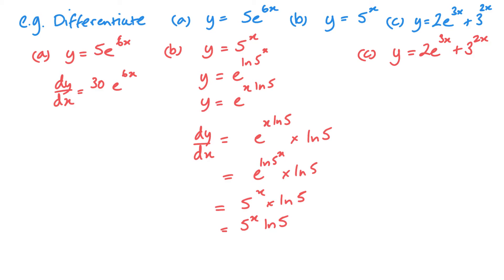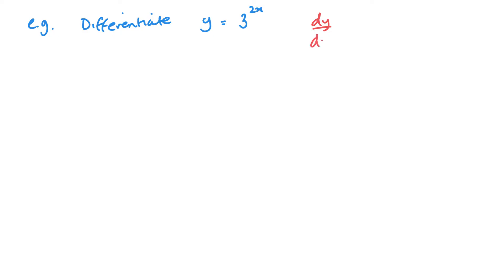Differentiating the next example: for 2e^3x, e^3x stays the same and I multiply by 3, giving 6e^3x. For 3^2x using the standard result: 3^2x stays the same, then multiplied by 2·ln3, written in brackets as 3^(2x) × (2·ln3).